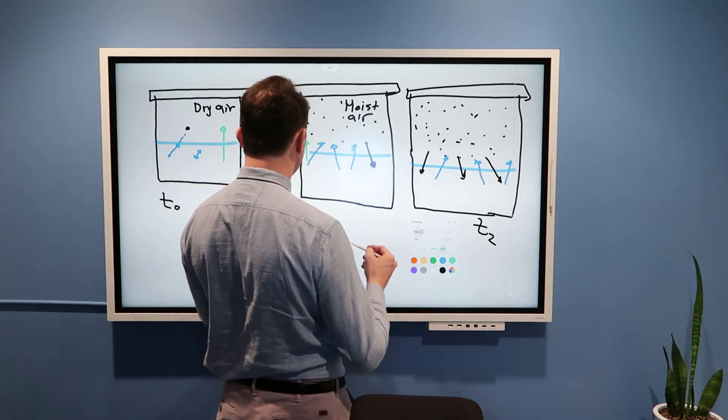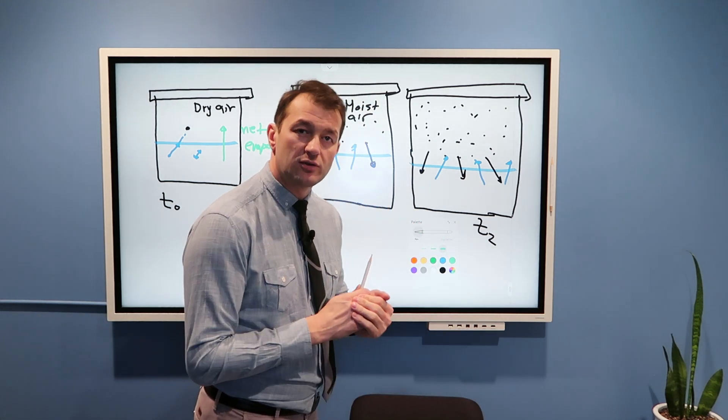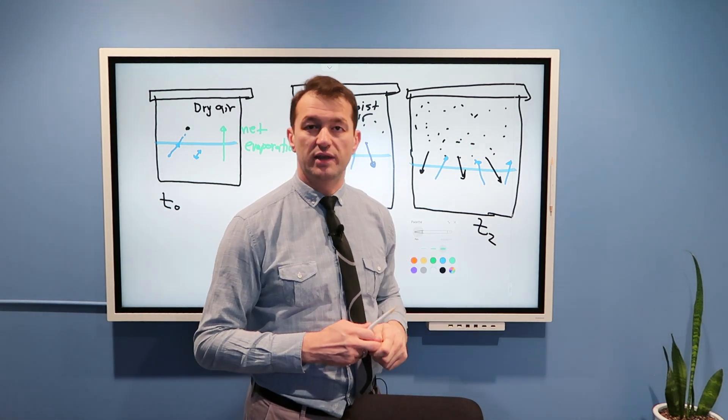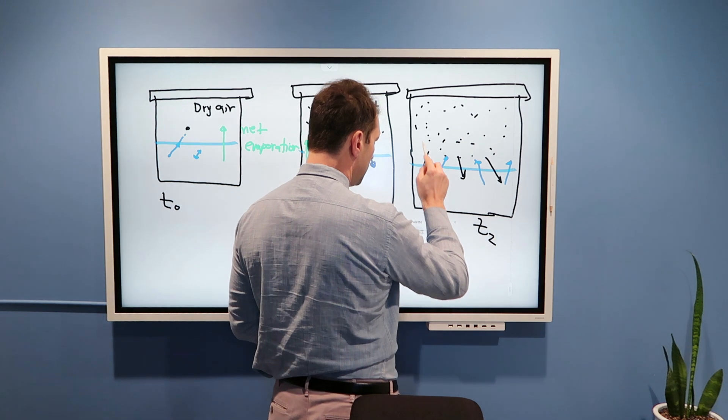There is no net evaporation, there is no net condensation. For every molecule that evaporates there is another molecule that condenses on average, which means this is now equilibrium.